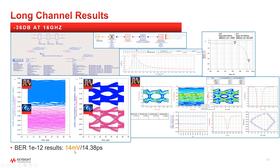We're seeing results of 14 millivolts and 14.38 picoseconds. The pass-fail eye needs to be 15 millivolts and 9.375 picoseconds at a bit error rate of 1e-12. In this correlation case, the transmitter EQ and the receiver CTLE were not swept for optimal values, so this isn't the best value to expect. But you can see its performance is where you would expect it to be for this maximum insertion loss case.